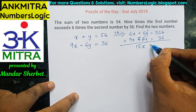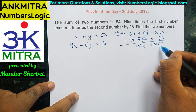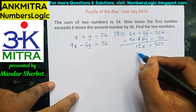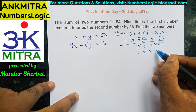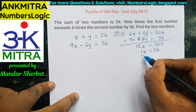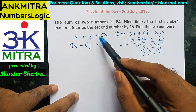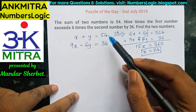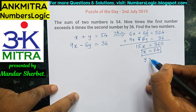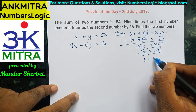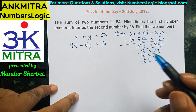6x plus 9x gives us 15x, and 324 plus 36 is 360. So 15x equals 360, therefore x equals 24. The first number is 24. Using x plus y equals 54, the second number is 54 minus 24, which is 30.